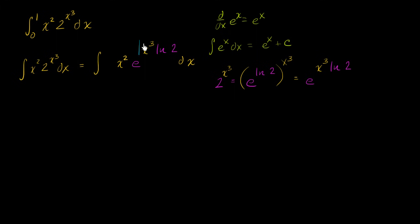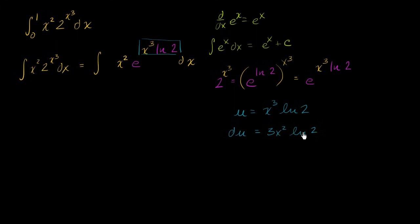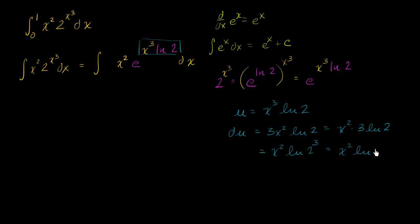So if we defined u as x to the third times the natural log of two, what is du going to be? Well, natural log of two is just a constant, so du is going to be three x squared times the natural log of two dx. We can reorder this as x squared times three natural log of two, which by logarithm properties is the same as x squared times the natural log of two to the third power — so this equals x squared times the natural log of eight dx.